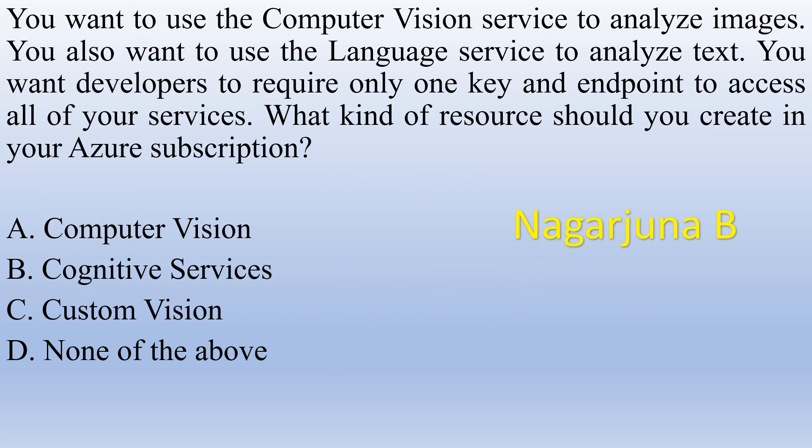You want to use the Computer Vision service to analyze images. You also want to use the Language service to analyze text. You want developers to require only one key and endpoint to access all of your services. What kind of resource should you create in your Azure subscription? Options: Computer Vision, Cognitive Services, Custom Vision, None of the above. The right answer is Cognitive Services.